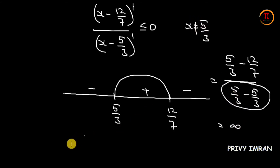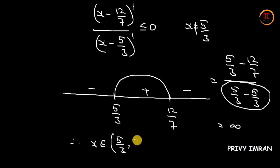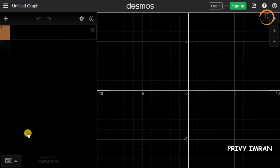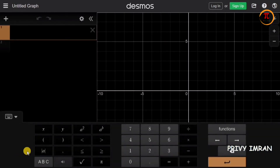Therefore we can conclude that x belongs to the interval from 5/3 to 12/7. Now we have learned this theoretically. Let us now verify it practically using the Desmos application.